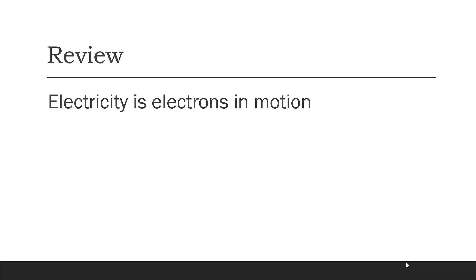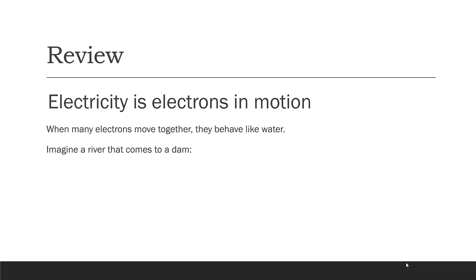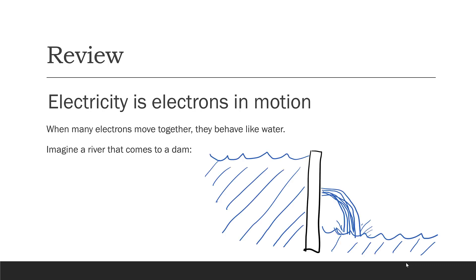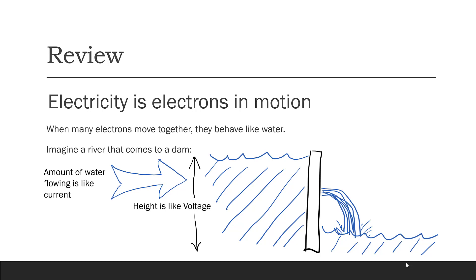Remember, we said that electricity is electrons in motion. And when many electrons move together, they behave like water. So we can think of electricity almost like water flowing down a stream. Imagine a river that comes to a dam. The amount of water flowing through the river is like the current, the height of the water is like the voltage, and the dam is like a resistor that makes it hard for the water to flow.